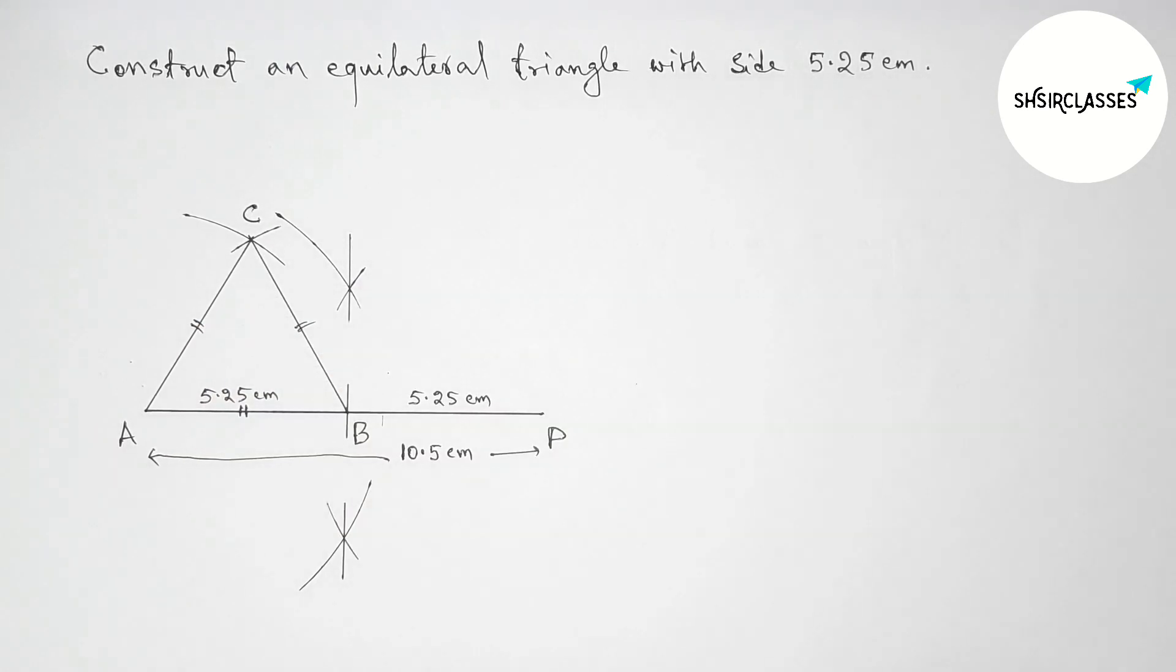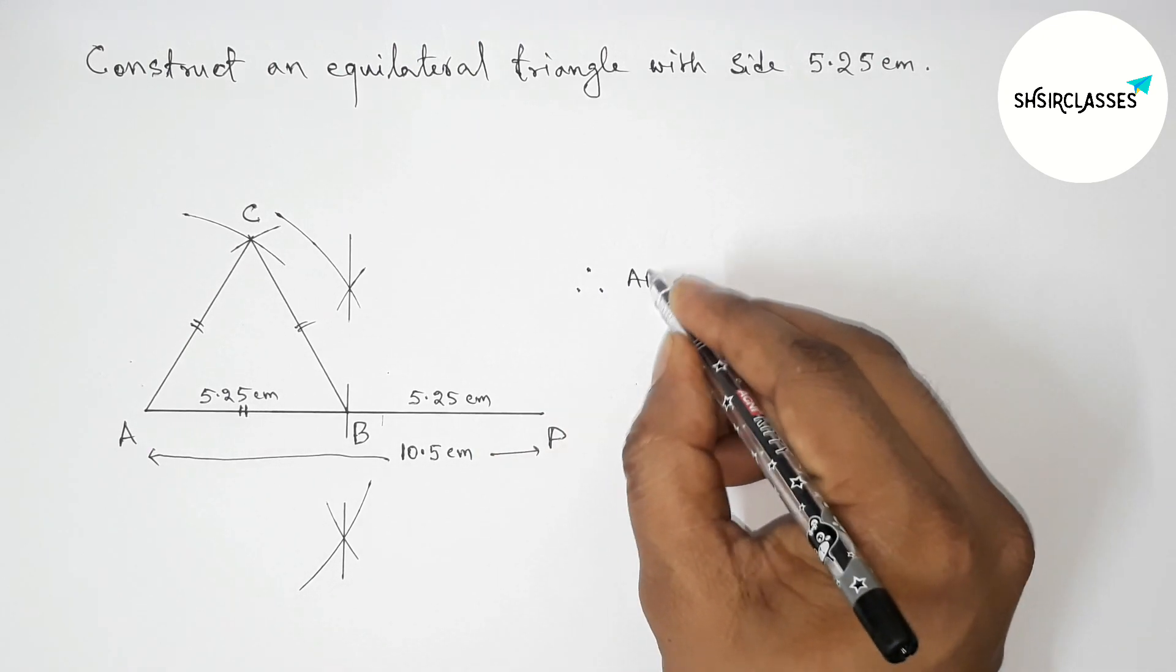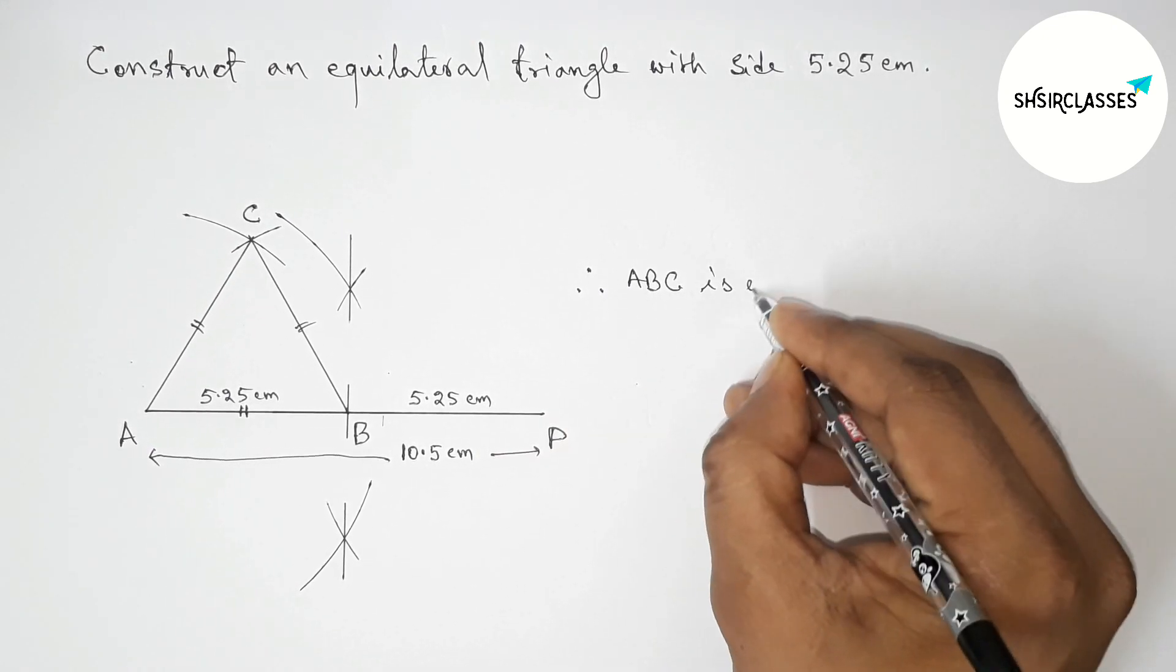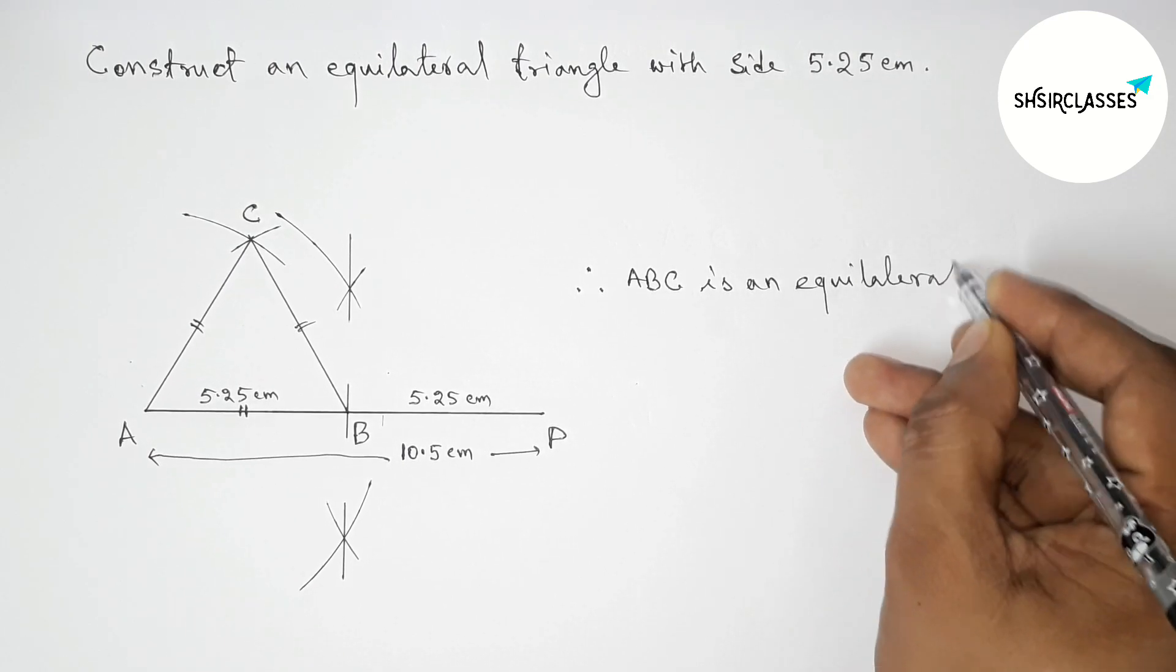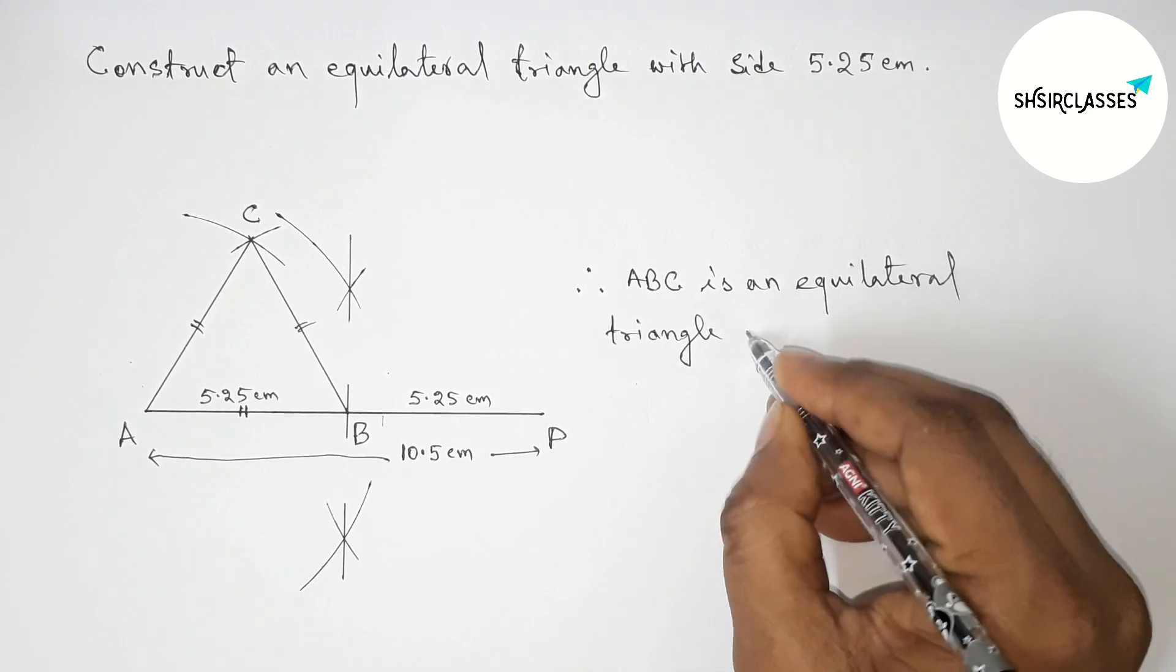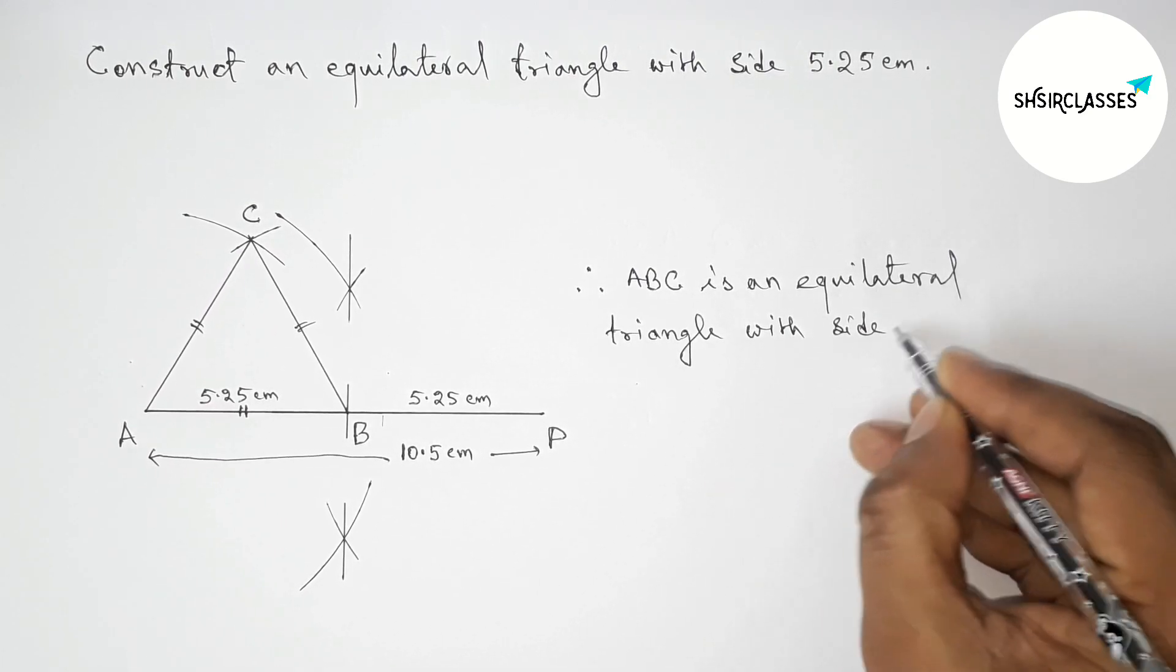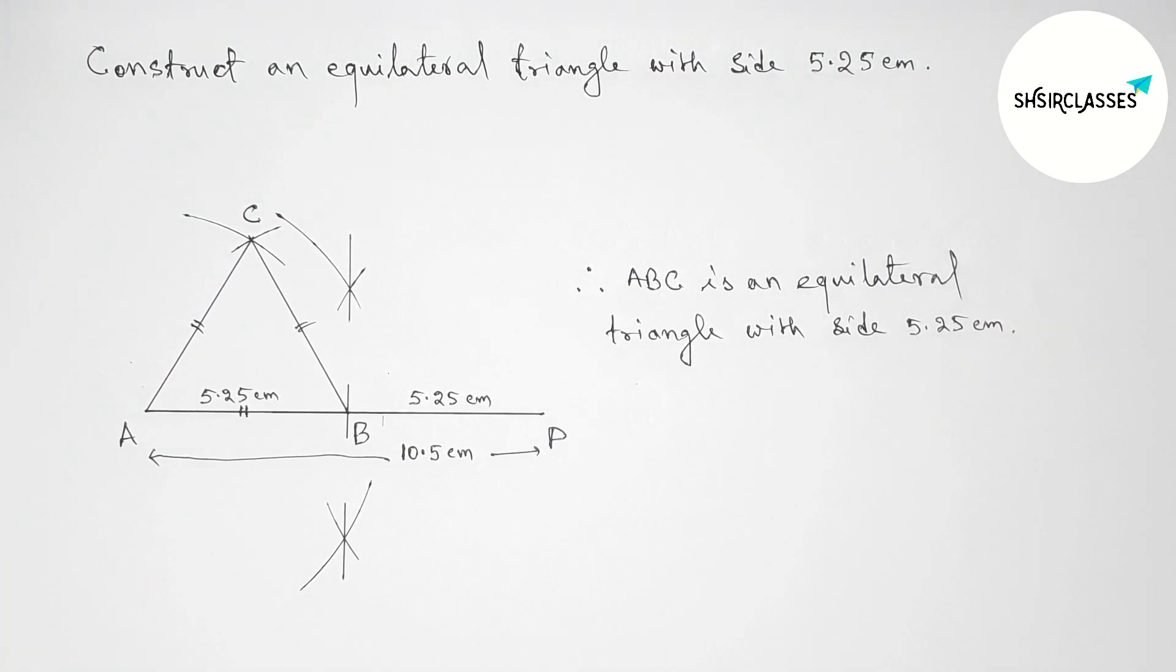We know that all the sides of an equilateral triangle are equal. So therefore, ABC is an equilateral triangle with side 5.25 centimeters. So by this way you can construct this equilateral triangle with side 5.25 centimeters.